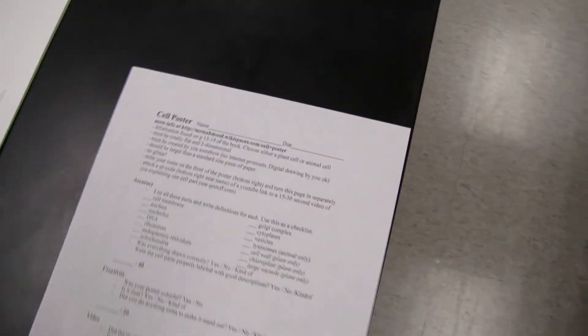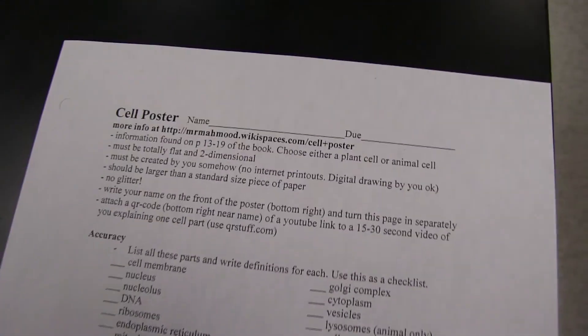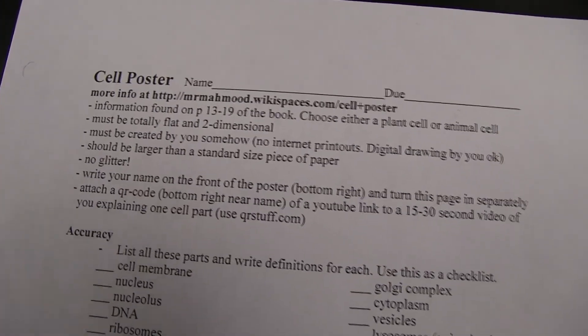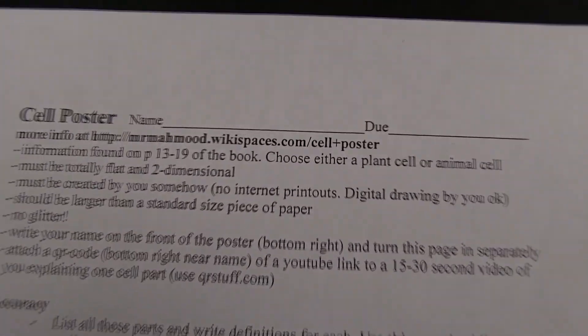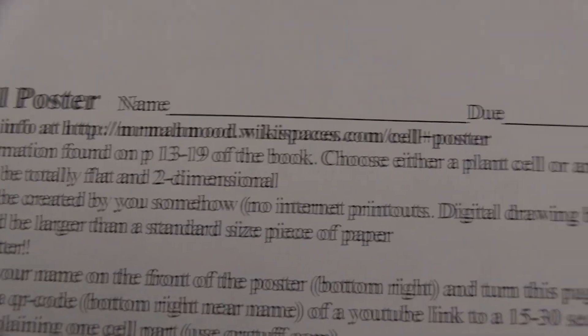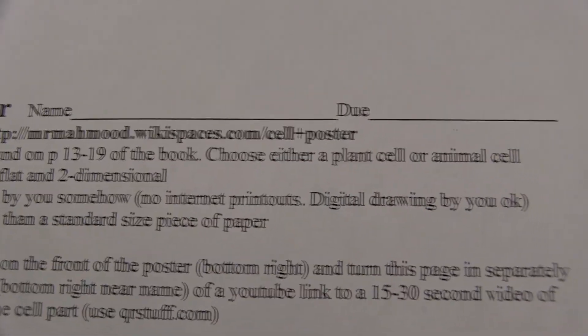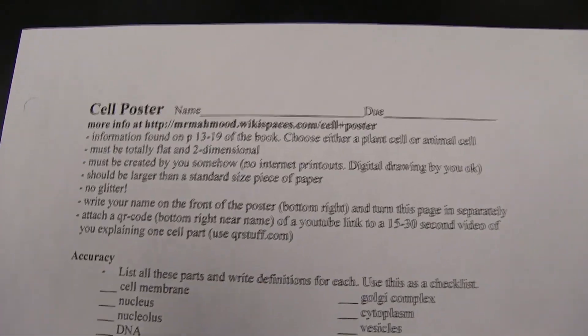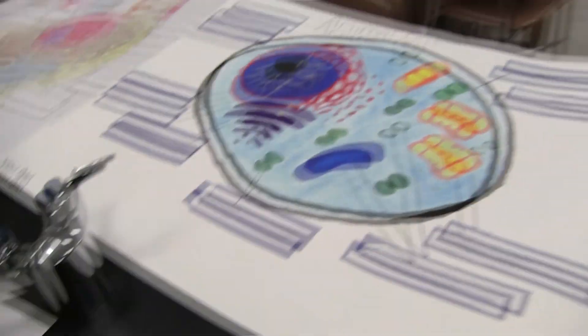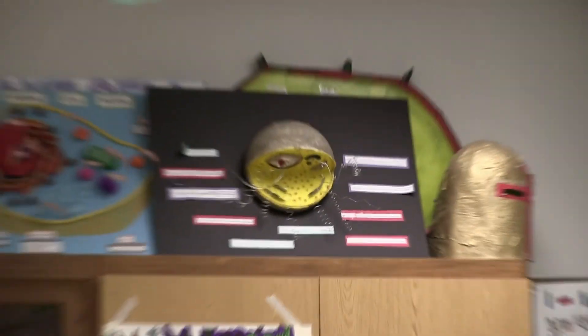There's a rubric that I gave you — it might be on a different color piece of paper. Use the rubric; it tells you everything you need to know. Information is going to be found on pages 13 through 19 of your textbook. You can choose either a plant cell or an animal cell. Also, your posters must be completely flat and two-dimensional.